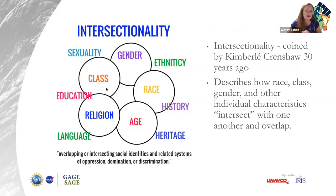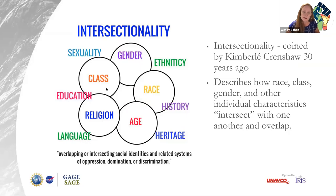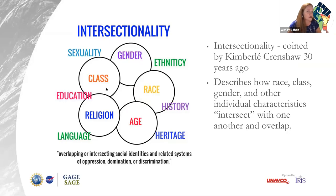Another important idea is intersectionality. This was introduced by Kimberly Crenshaw 30 years ago — she was a critical race scholar, among many other things. It describes how race, class, gender, and other intersecting characteristics overlap. The important thing is that this acknowledges human beings are complex and can't just be defined by one identity. Additionally, these different identities will have different oppressions depending on the situation and location, and not every individual is going to identify with each one of these traits in the same way.